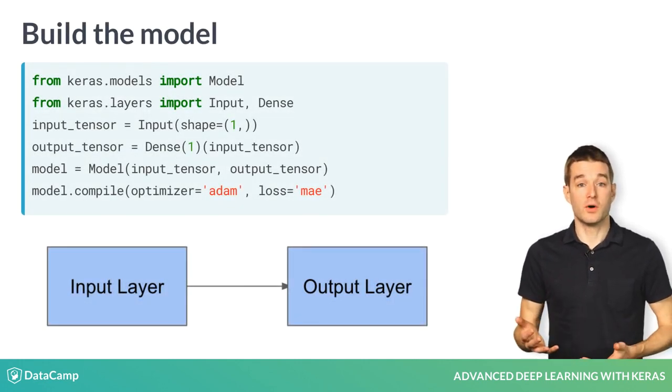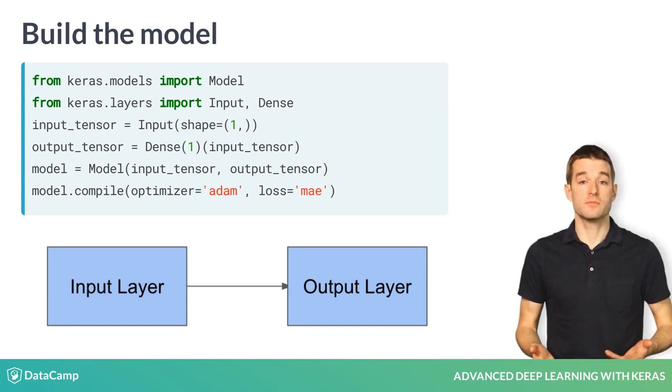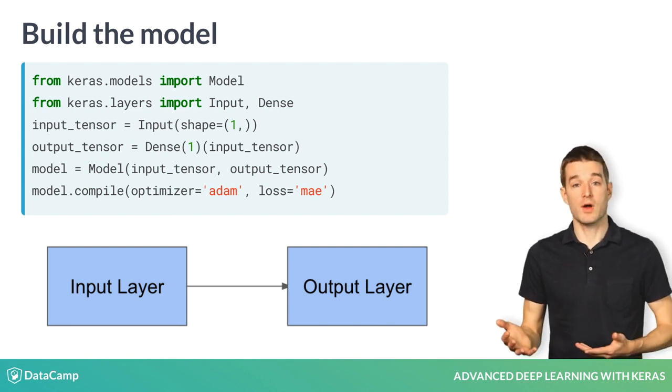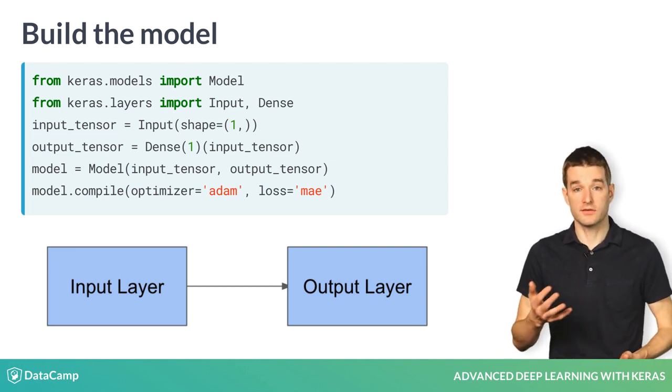Here is the model from lessons 1 and 2 defined in a single code chunk. This is a very basic Keras regression model with one input and one output. You can use this model for any regression problem with a single predictor and a single outcome.